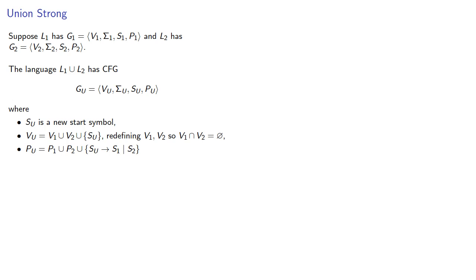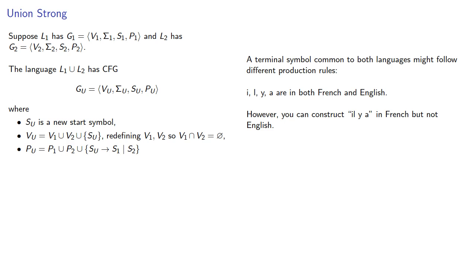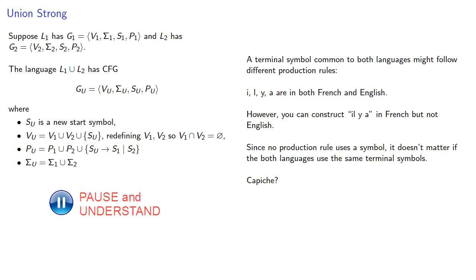Let's consider. A terminal symbol common to both languages might follow different production rules. For example, the letters I, L, Y, and A are in both French and English. However, you can construct this in French, but not English. But no production rule uses a symbol. So it doesn't matter if both languages use the same terminal symbols. And because of this, our set of terminal symbols can just be the union of the two sets of terminal symbols. Also because of this, we often assume that the sets of terminal symbols are actually the same.